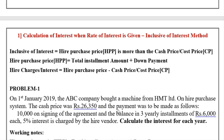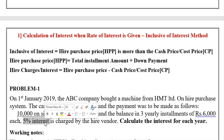The cash price was 26,350 rupees. The payment was to be made as follows: a down payment of 10,000 rupees on signing of the agreement. The down payment is the initial payment made by the hire purchaser at the time of signing the agreement or delivery of goods. The balance is to be paid in three yearly installments of 6,000 rupees each.